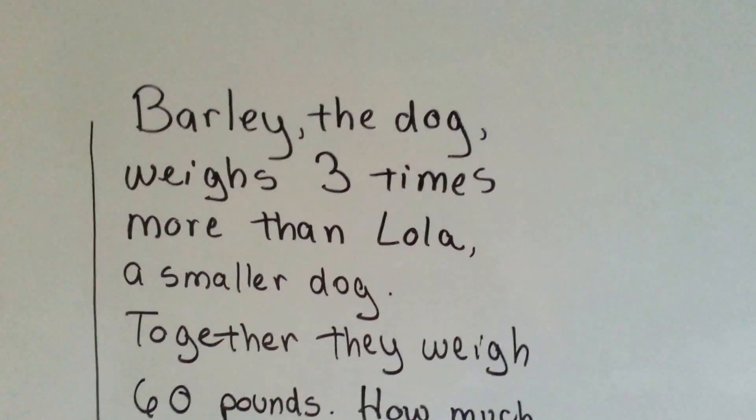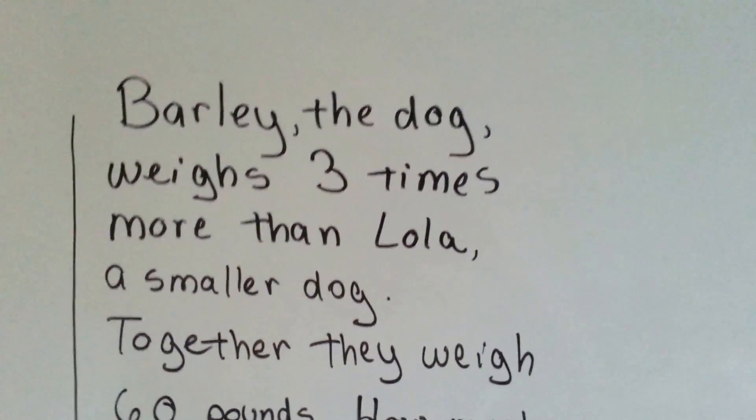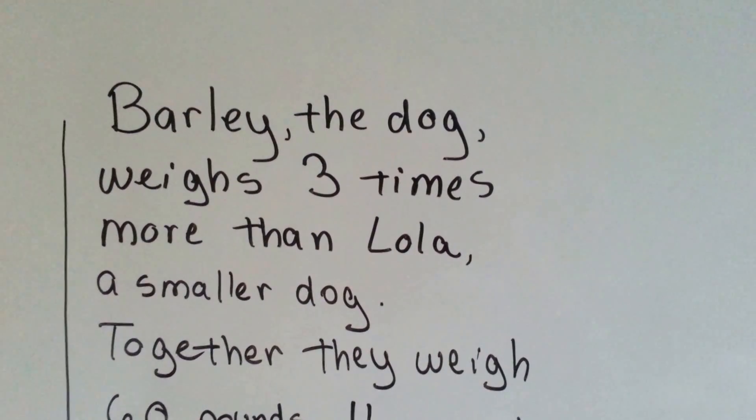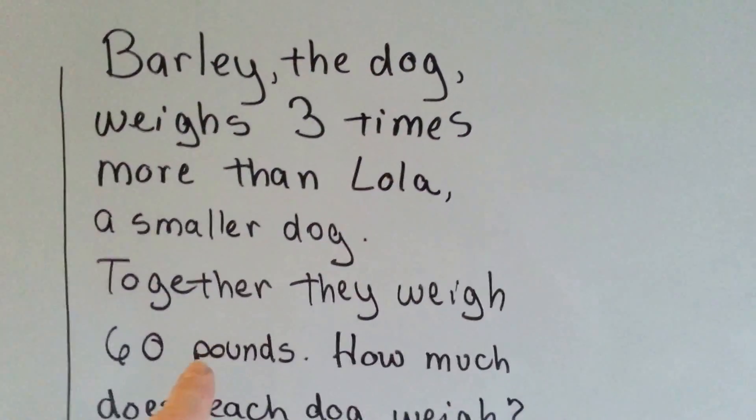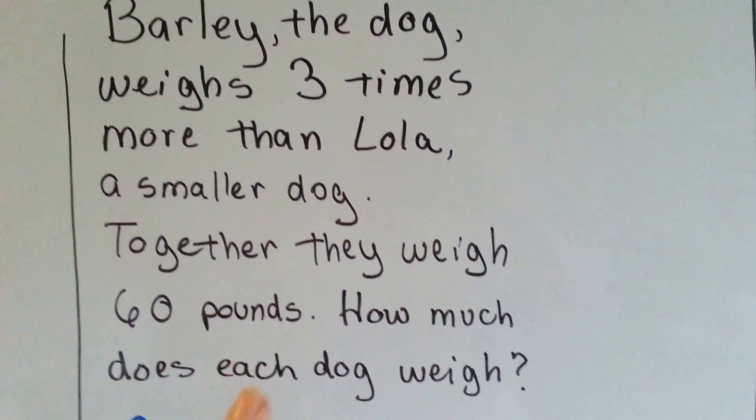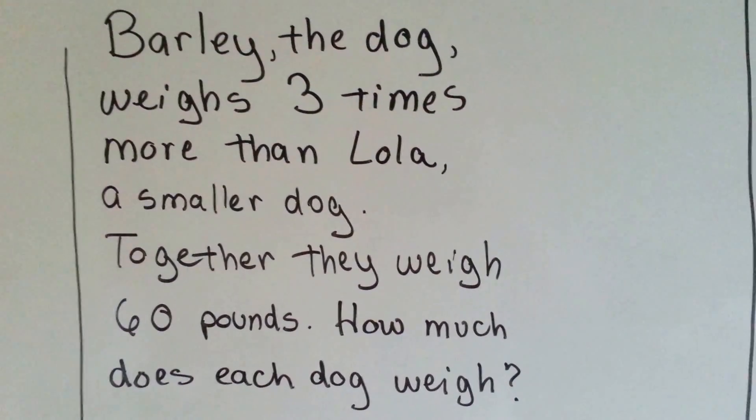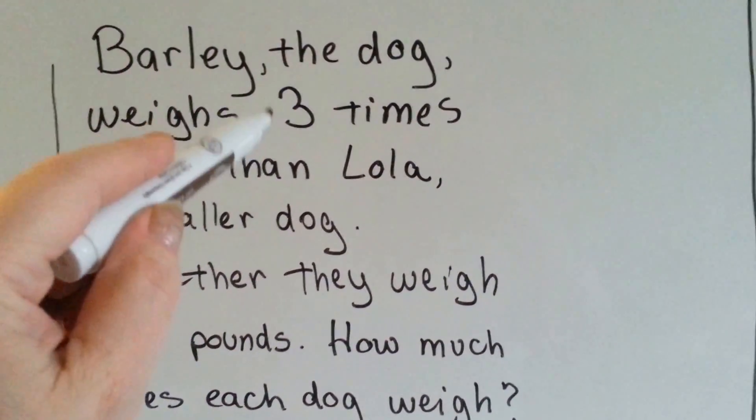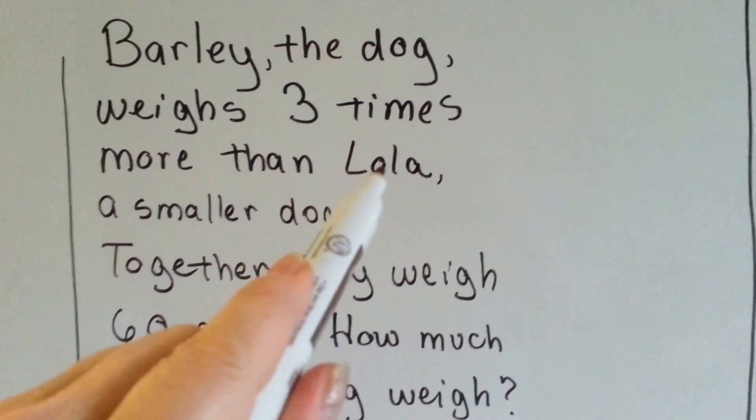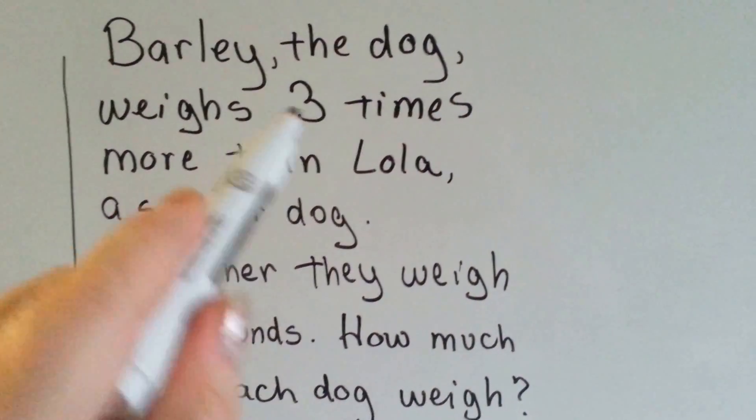Barley the dog weighs three times more than Lola, a smaller dog. Together they weigh 60 pounds. How much does each dog weigh? Barley's got three n's, and Lola's got one n. Do you see how I did that?